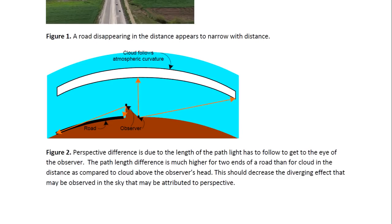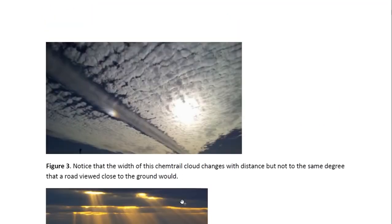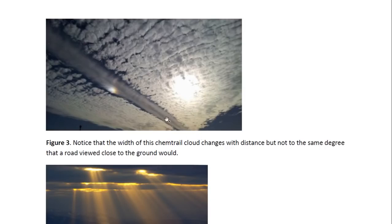So that means that a lot of diverging effects observed in the sky that may be attributed to perspective are in fact due to something else. As you can see, this is a chemtrail in the sky and you can see there is a bit of divergence — it does seem narrower in the distance, but not by a huge amount. This is because the observer is on the ground and has to look up. There's quite a distance between the ground and the top of the cloud, and the difference in the two path lengths is not that much.